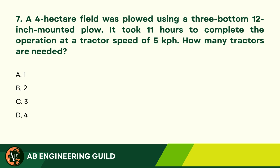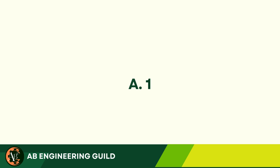Question 7: A 4-hectare field was plowed using a 3-bottom 12-inch mounted plow. It took 11 hours to complete the operation at a tractor speed of 5 kilometers per hour. How many tractors are needed? A. 1. B. 2. C. 3. D. 4. Answer: A. 1.